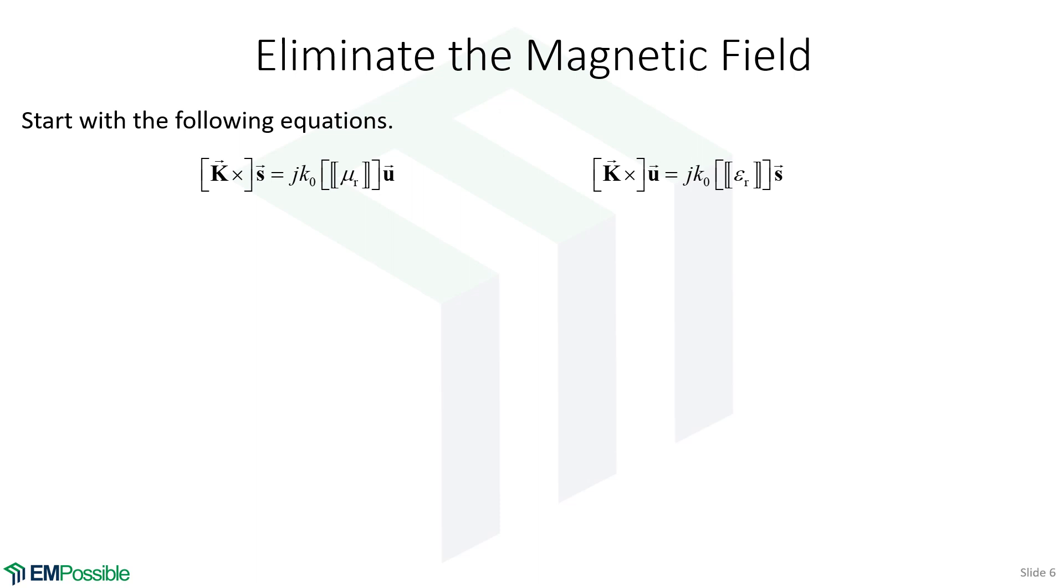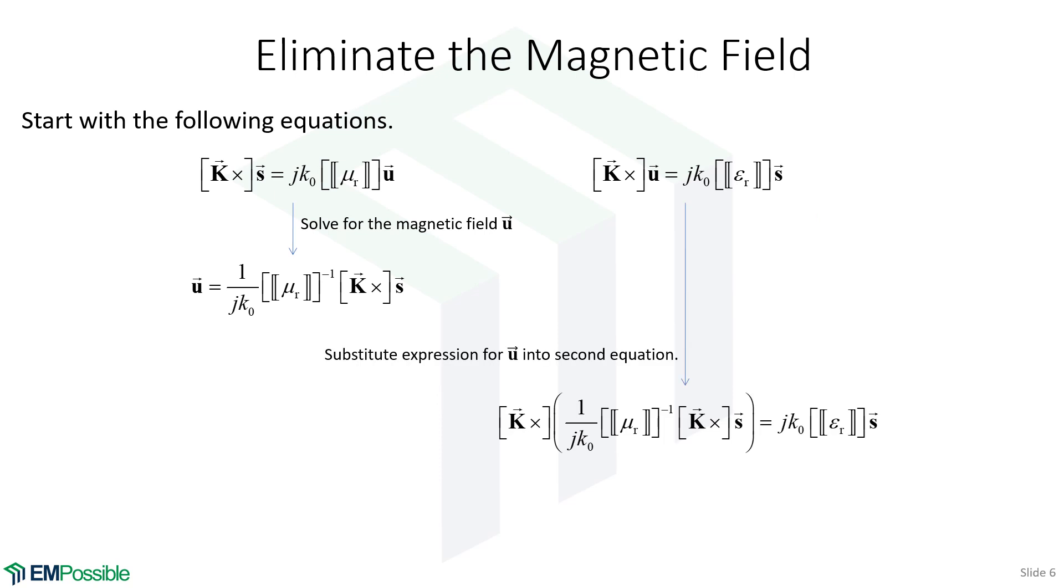Let's derive the eigenvalue problem. We'll do this in terms of the electric field by eliminating the magnetic field. So the first thing we'll do is take that first equation and solve it for the magnetic field U. Now that we have an expression for U, we can plug that in, and we'll end up with a single expression just in terms of S. We can bring the 1 over JK to the outside, then bring the JK over to the right-hand side, and we end up with just minus K naught squared.